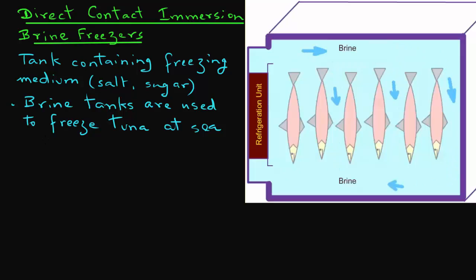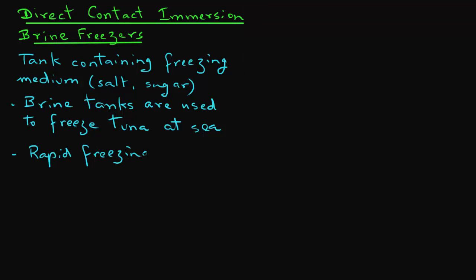These types of freezers are most suited for irregular shaped products, such as fish or whole chicken, as one can get good heat transfer between the product and the freezing medium. Due to the direct contact between the freezing medium and the product, one achieves rapid freezing and convective heat transfer coefficients around 500 watts per square meter Kelvin are obtained in these types of systems.